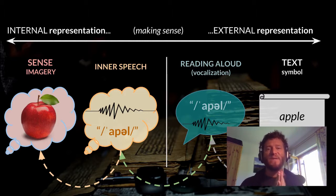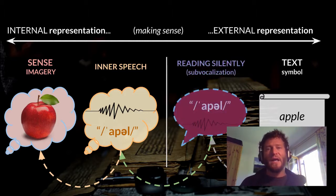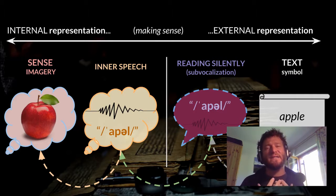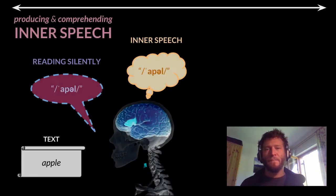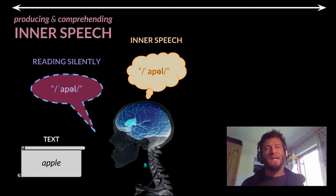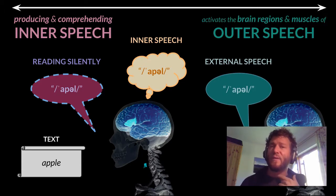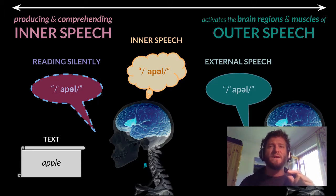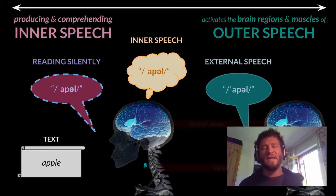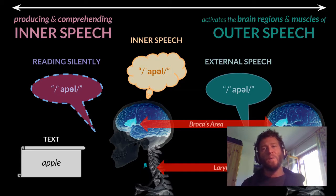A lot of research has been done on silent reading. What they found is that most of the time what we're doing is sub-vocalizing and actually accessing meaning via our inner speech, so we're never really reading silently. Whenever we're producing or comprehending speech, these systems are all working together. We're activating the same brain regions, we're using the same muscles even. They've done studies where they've attached very sensitive equipment to your vocal cords and noticed that they move in similar ways.